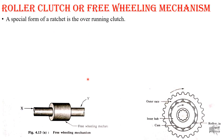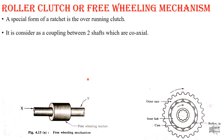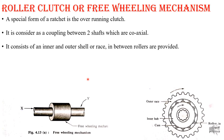Now we will talk about roller clutch or freewheel mechanism. This is also called the overrunning clutch. If you have a connection between two shafts — shaft X and shaft Y — where one shaft is running at lower speed and another at higher speed, this is how this part works. The two shafts X and Y are in co-axial arrangement, meaning the axes of the two shafts should be in the same line.